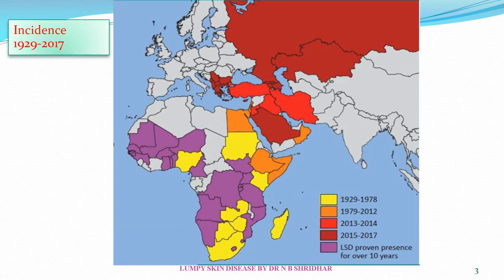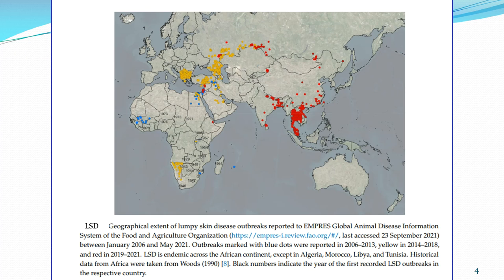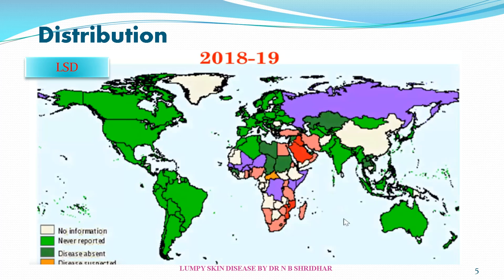The disease started in 1929 in Africa and has spread to many other countries, especially from African countries to Asian countries and other subcontinents. The geographical extent of Lumpy Skin Disease outbreaks has been reported from different parts of the world, migrating from Africa to Asia, then to India and many other parts.